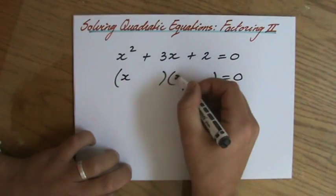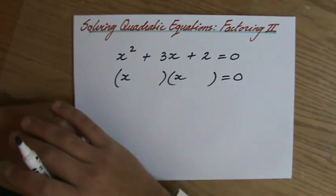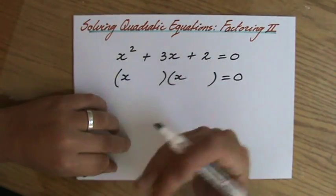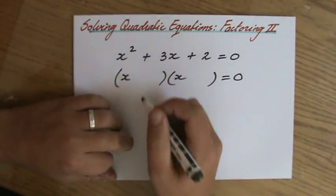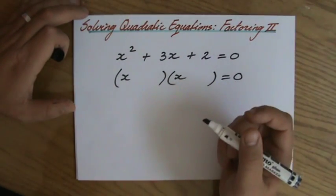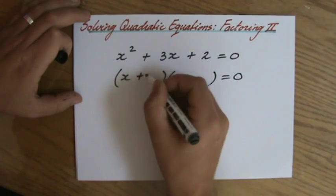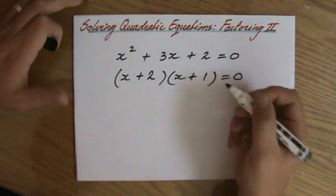So part 1, I'll put an x times x there. Two numbers that multiply to 2, and if I add those two numbers, 3, a positive 3. Hopefully maybe you want to take a look at that, think about it. What do you think? Yes, 2 and 1.